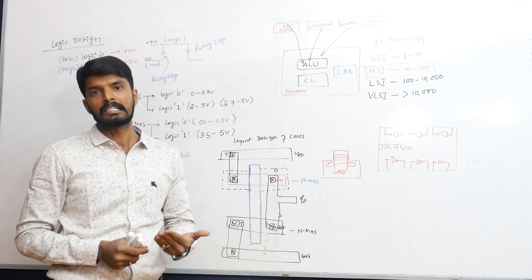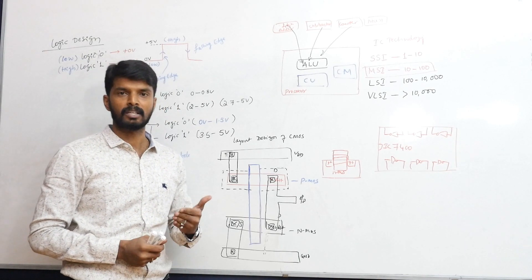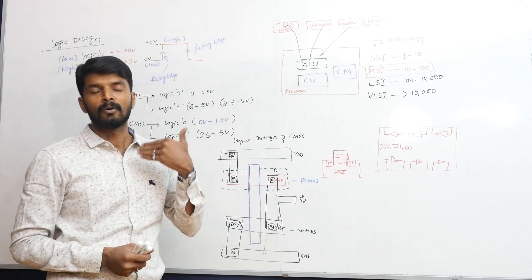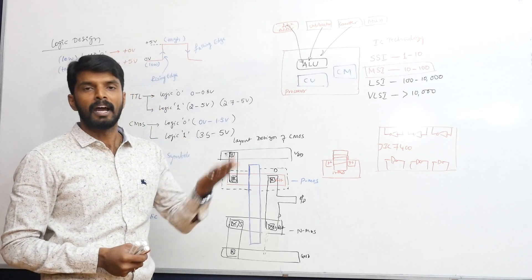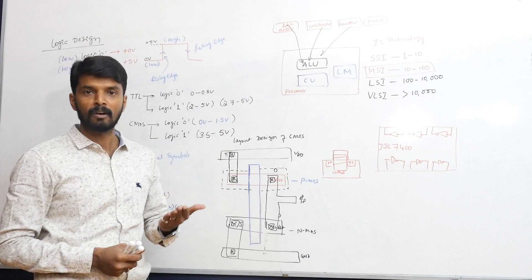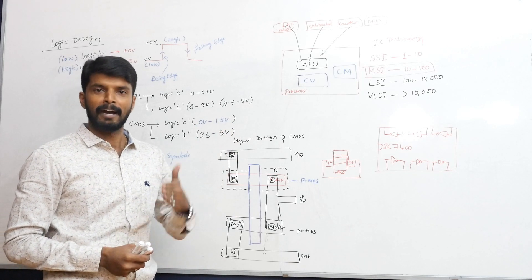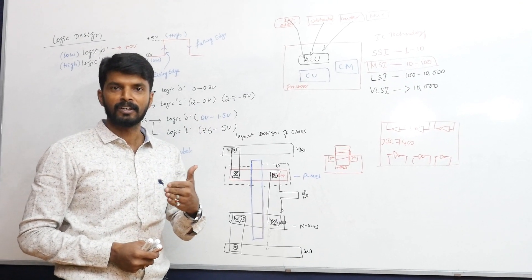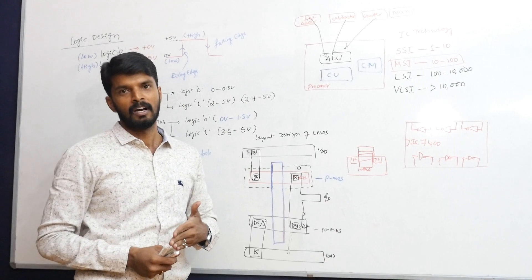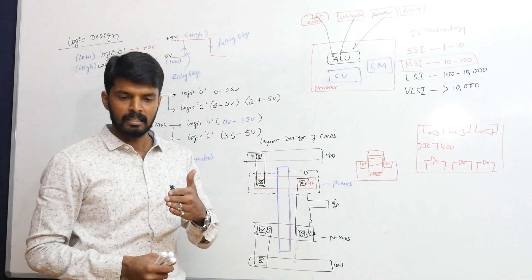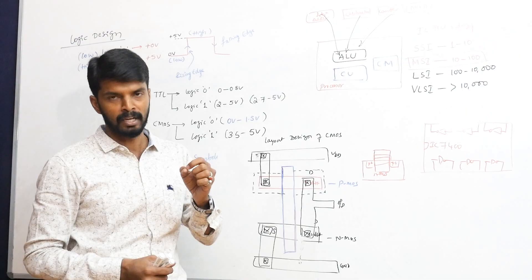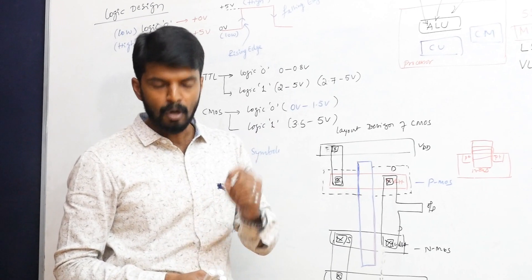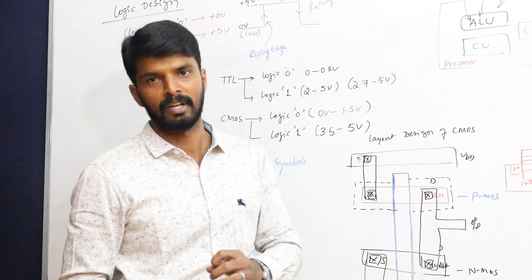This has been a small introduction and overview of digital logic design. In the next class, we will start the actual syllabus: how to define a problem statement, construct a truth table, derive a Boolean equation, and synthesize a circuit. Since the syllabus doesn't include Boolean algebra formally, I will also introduce Boolean algebra and solve some related problems.